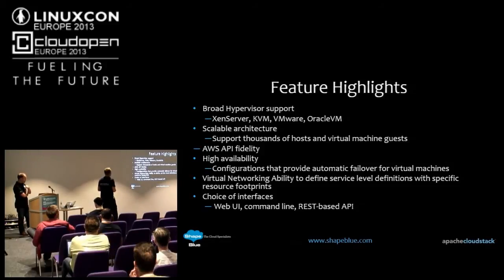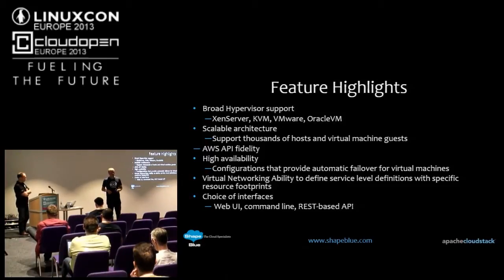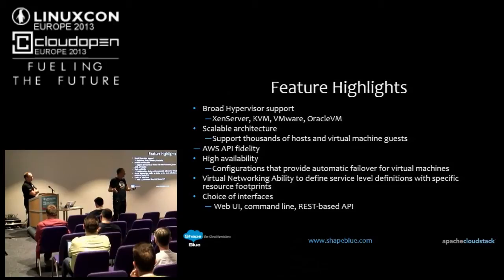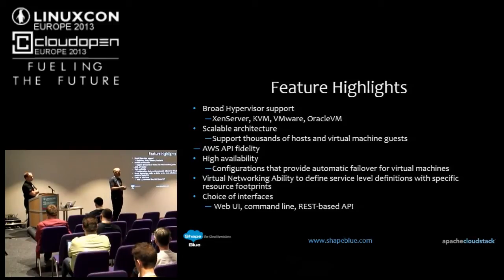We have AWS API fidelity. CloudStack also manages the HA piece — it sits on top of the hypervisor and manages high availability. We have a virtual networking model within CloudStack, which comes from its origins as a multi-tenanted public cloud platform, so network isolation between tenants was a key part. We've got a simple web UI, a command line, and a REST-based API.